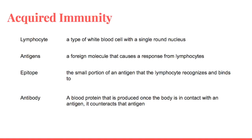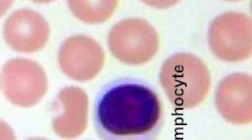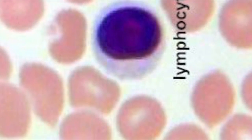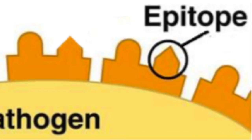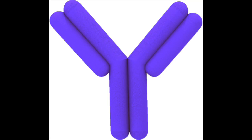Now moving into acquired immunity. Acquired immunity is highly specific and only develops after you are already exposed to that foreign invader or bacteria. Key vocabulary: a lymphocyte is a type of white blood cell with a single round nucleus. An antigen is a foreign molecule that causes a response from lymphocytes. An epitope is the small portion of an antigen that the lymphocyte recognizes and binds to. An antibody is a blood protein produced once the body is in contact with an antigen, and it counteracts that antigen.